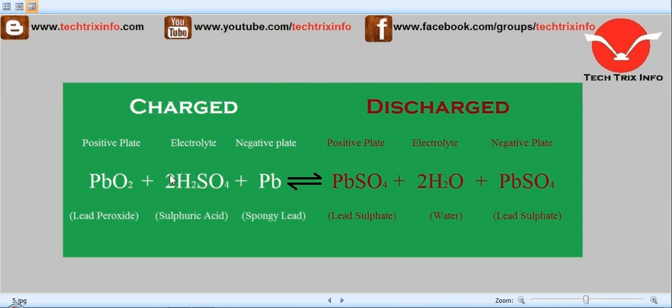the electrolyte is sulfuric acid, 2H₂SO₄, and in the negative plate we have spongy lead, Pb. When the battery is in a discharged condition, we have lead sulfate, PbSO₄, in the positive plate, water, 2H₂O, as electrolyte, and lead sulfate, PbSO₄, as the negative plate.